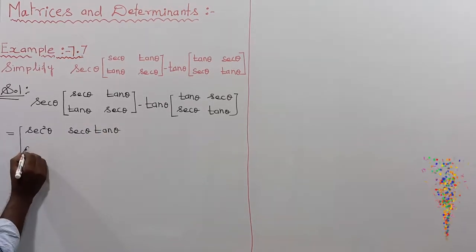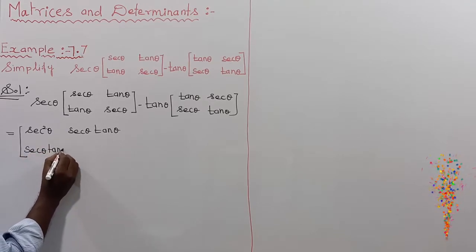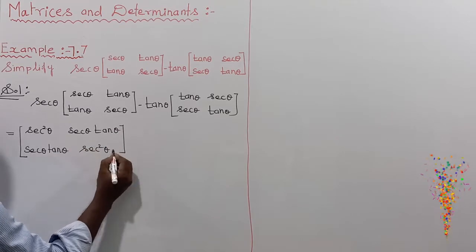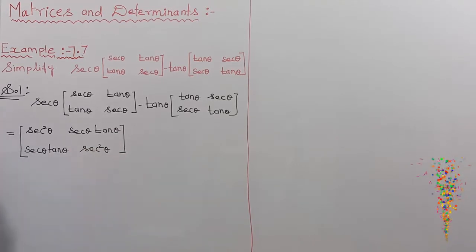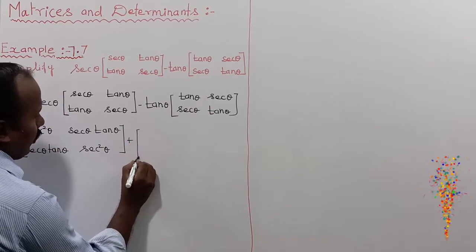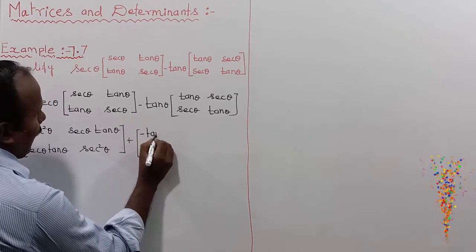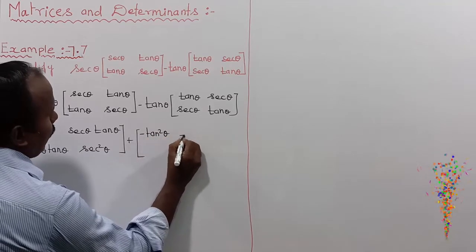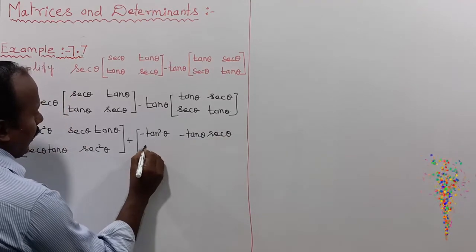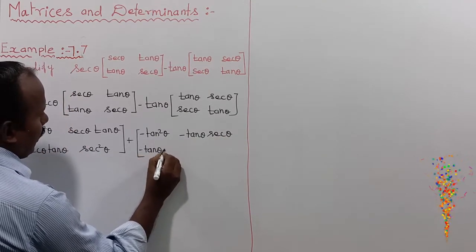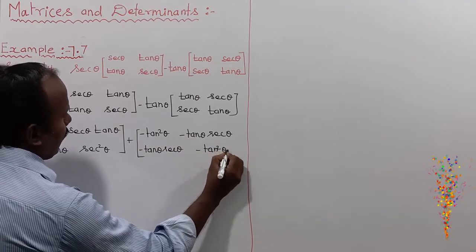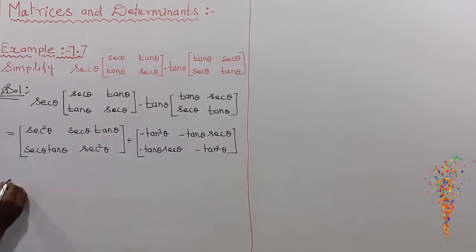Next, for the second part, we bring tan θ inside. Since we have a minus sign, tan θ multiplied by tan θ becomes minus tan²θ. The remaining terms are minus tan θ, minus sec θ, and minus tan θ, minus sec θ. So the second expanded matrix contains minus tan²θ.